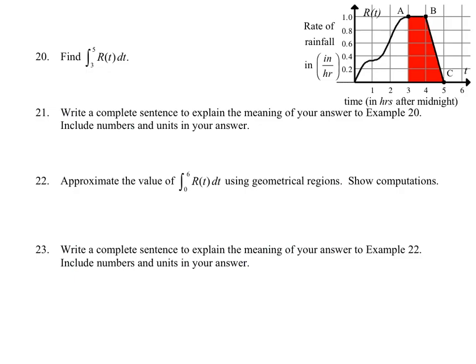All right, now we get into some fun stuff. Number 20, find the definite integral from 3 to 5 of R(t) dt. So the rate of rainfall, and notice the units, and I think that this is really important. This is going to be inches per hour on my R(t). Well what is dt? That's going to be hours, and so when we multiply those out we're just going to get inches. So this would be our amount.